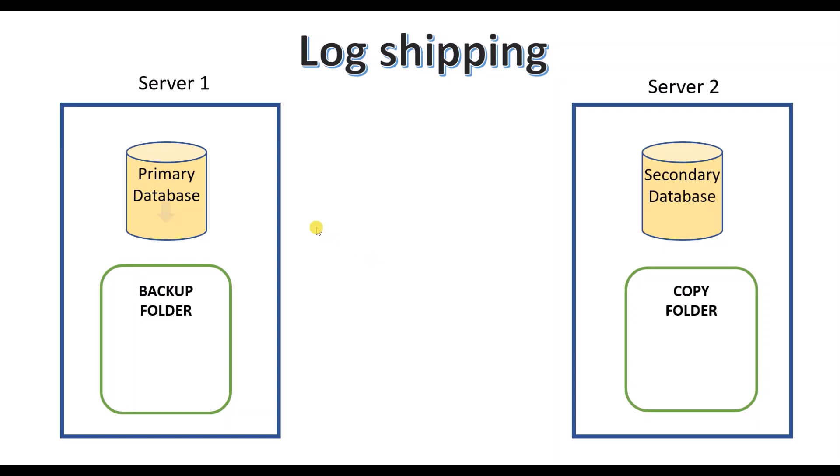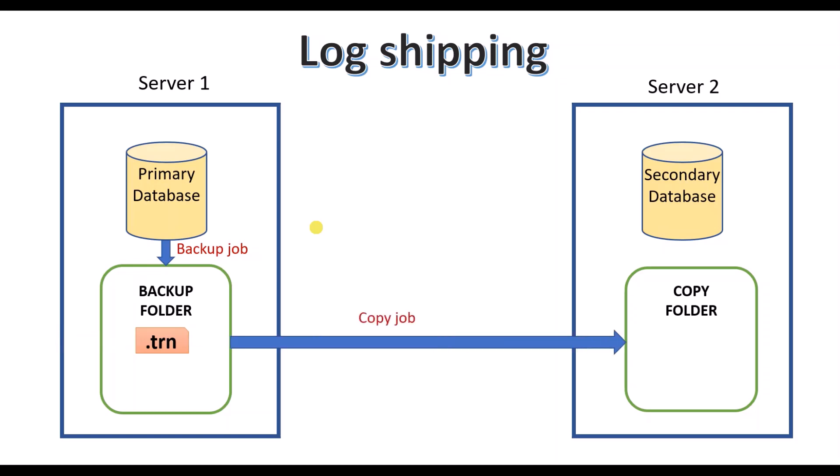When the backup job is executed, SQL Server takes a log backup of your primary database and keeps it in the backup folder. Next, when you execute the copy job, the .trn files present in the backup folder will be copied from the backup folder to the copy folder. While the copy job is in progress, the .trn files will be copied with the .wrk extension — only once the copy job is executed successfully will the .wrk extension be renamed to .trn.